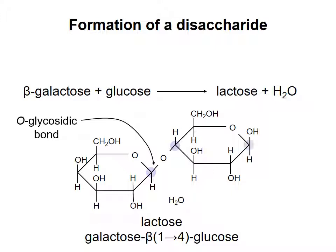Note that because the anomeric carbon of glucose is not involved in an O-glycosidic bond, the glucose ring can still open and close. The anomeric carbon of the glucose part of the molecule can interconvert between the beta and alpha configurations. The lactose molecule as a whole is designated alpha or beta based on the configuration of the hydroxyl on the anomeric carbon of the glucose part. So the structure shown here is beta-lactose.